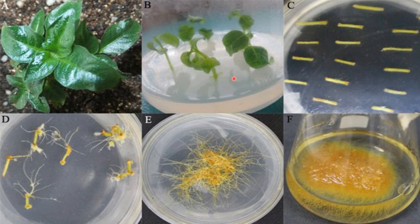For induction of hairy root culture in vitro, first we wound the explant and then inoculate it with Agrobacterium rhizogenes. Usually two to three days later, the explant is transferred to solid medium with antibiotics such as cefotaxin, vancomycin, or ampicillin to kill Agrobacterium rhizogenes. Hairy roots will be induced within a short period ranging from one week to over a month depending on the species. The decontaminated hairy root can then be subcultured on phytohormone-free medium.